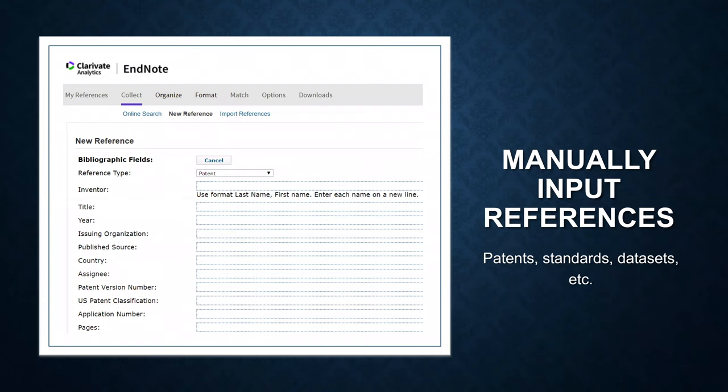First, I'm going to show you how to manually import references, especially for patterns, standards, or datasets. Go to Collect and click on New Reference, and try your best to fill out the bibliographic fields.